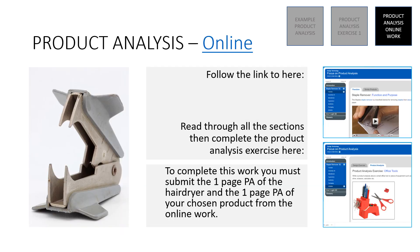Well done — you're back and you've done the first task. This is the second task. You're going to follow a link — the link will be in the video and also clearly on the classwork. You should end up at the page on the right: Focus on Product Analysis. Look through the sections on the blue menu, and then complete the exercise at the bottom where it says Activities, second tab, Product Analysis. To complete this week's work, you need to submit two pages of work: the first page is the product analysis for the hairdryer, and the second page is the product analysis from the Focus on Product Analysis online resource.